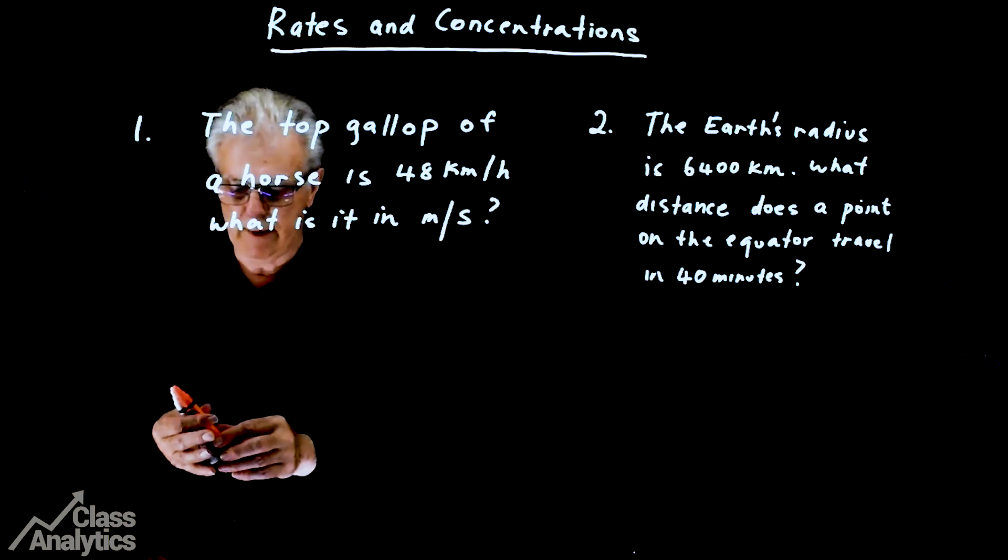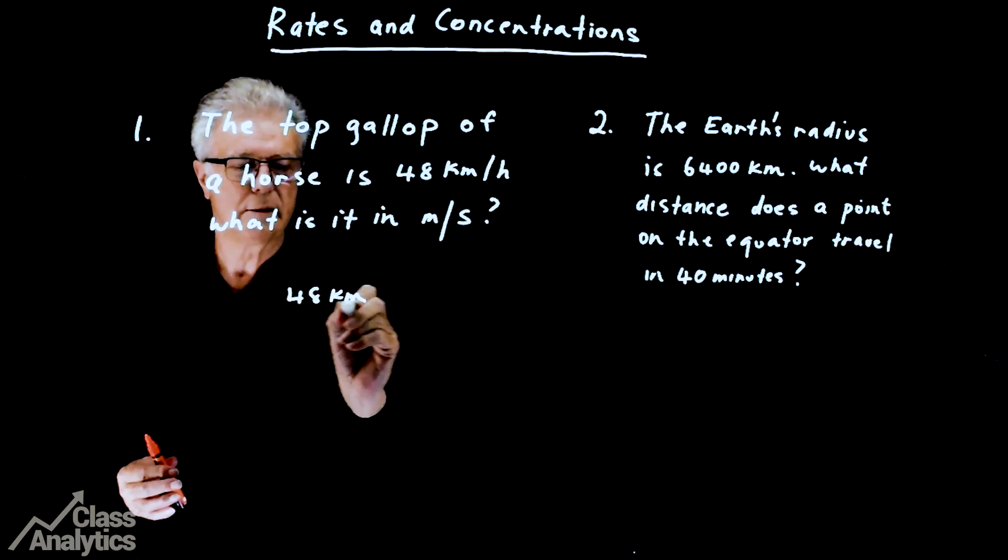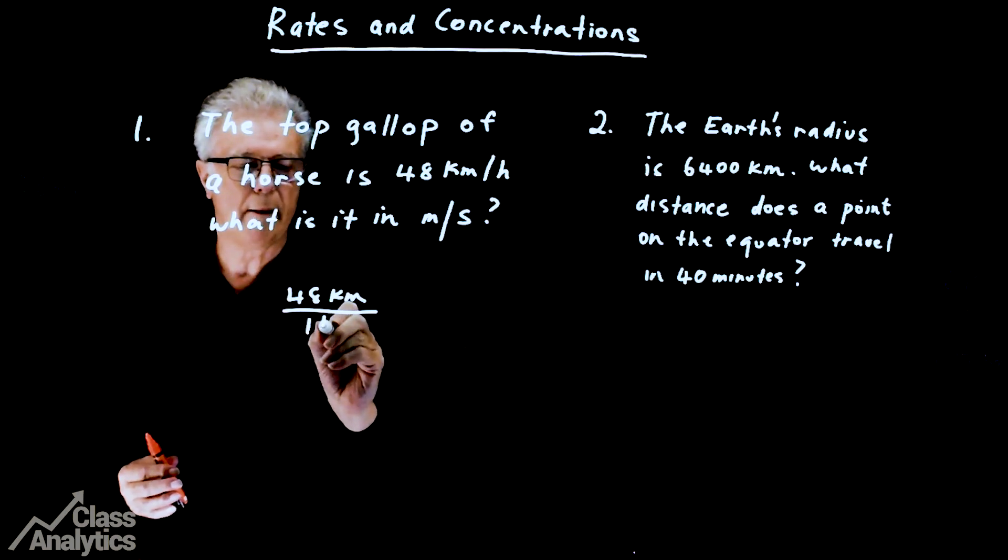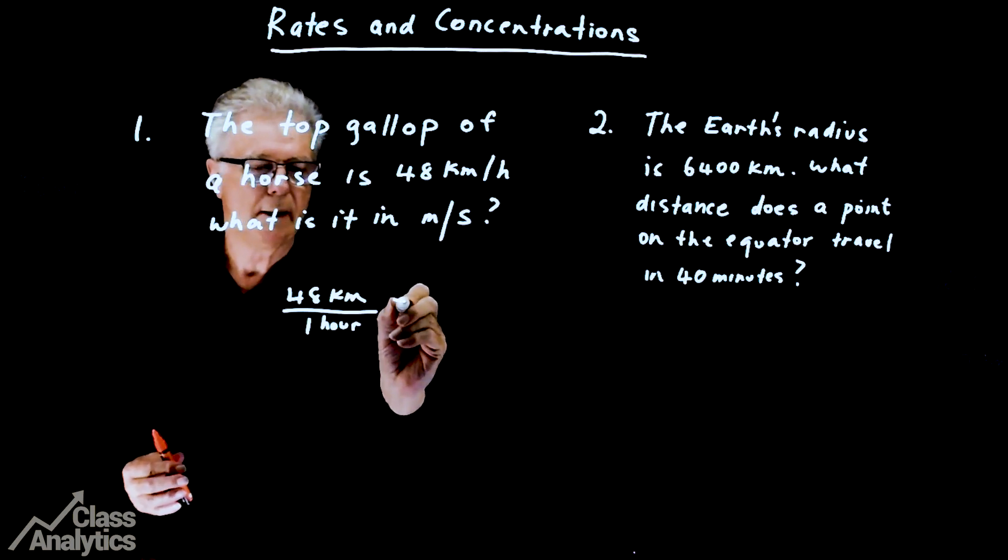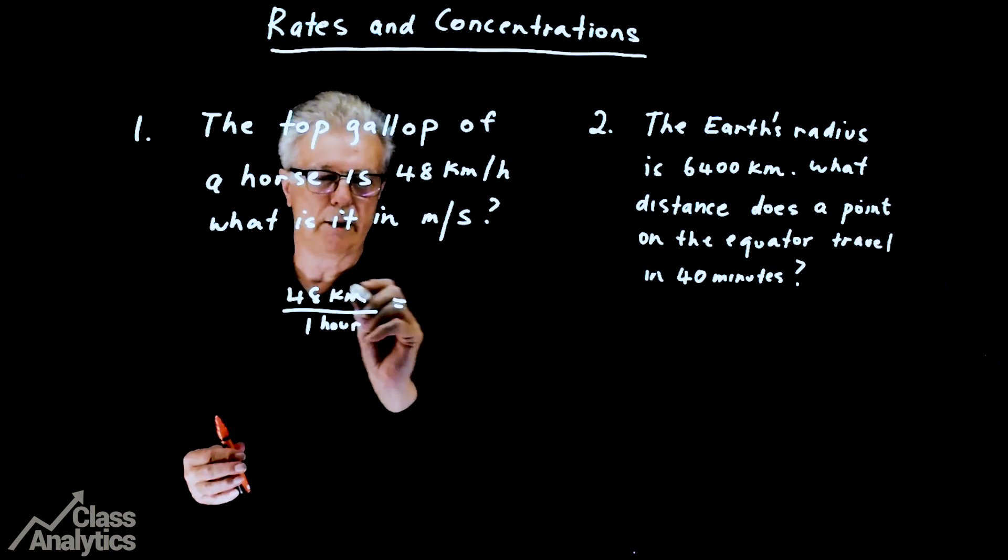Now I'll rewrite that as 48 km over 1 hour. Now 48 km, we know that there are 1,000 metres in a kilometre.